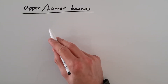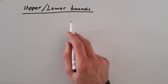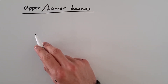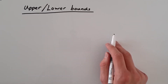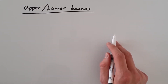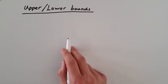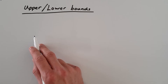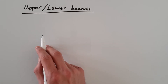So now let's think about the upper and lower bounds of a number. This is essentially thinking about what could be the lowest and what could be the largest numbers that, when rounded, would give us the number we have in question. Questions like this will always give you a number and tell you to what degree it's been rounded, and from that you can work out your upper and lower bounds.